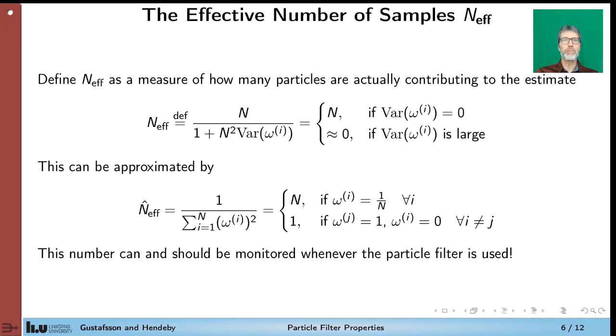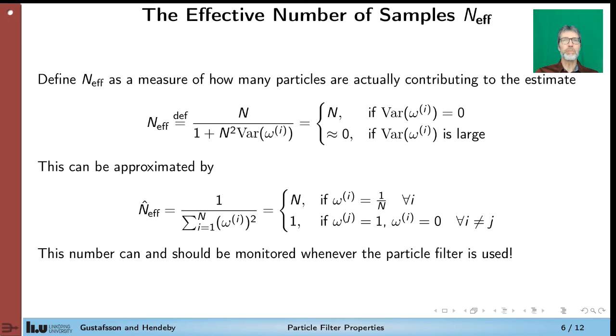So the effective number of samples is a good way to monitor the performance of the particle filter. And we have a definition here, where we compute it as the number of particles divided by 1 plus N squared multiplied by the variance of the weights. So if all weights have the same magnitude, say that they are 1 over N, then the variance is 0. And this definition turns out to be N. And if the variance is large, then this term will dominate here, and we will get approximately 0.